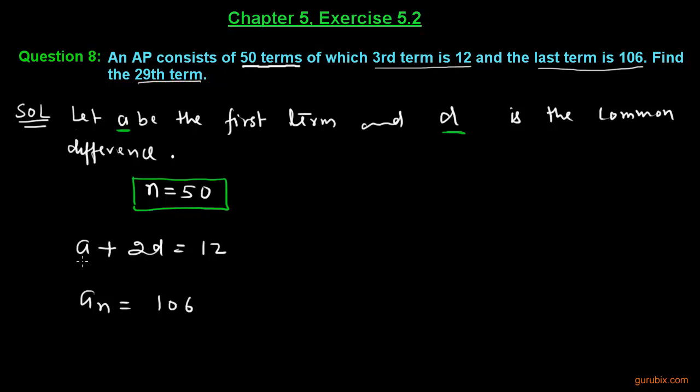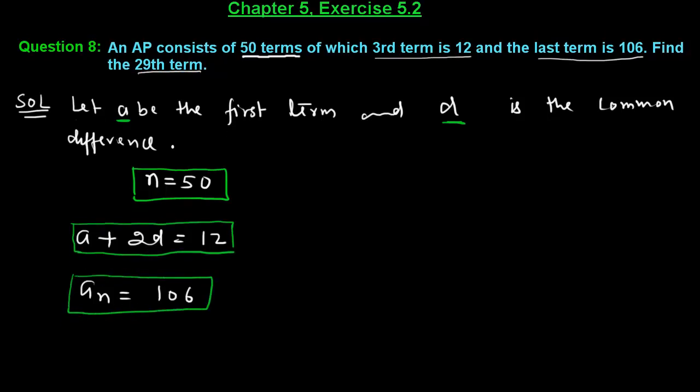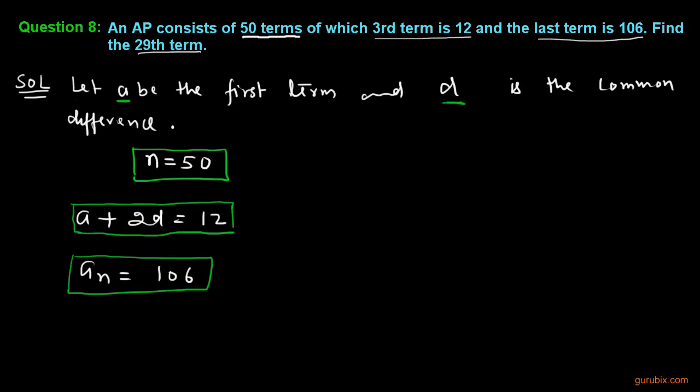The third term A plus 2D is 12, and the last term is 106. So let us see how we shall solve this question.